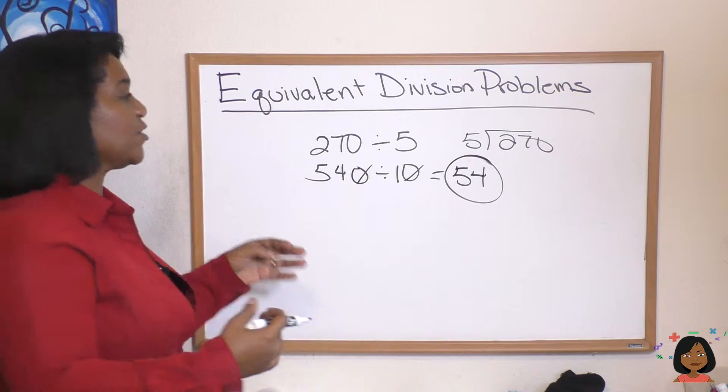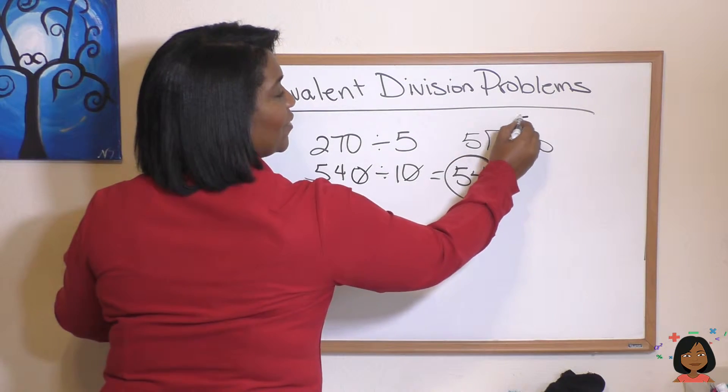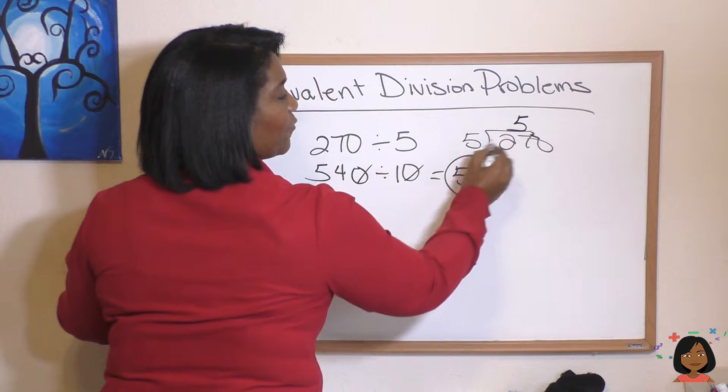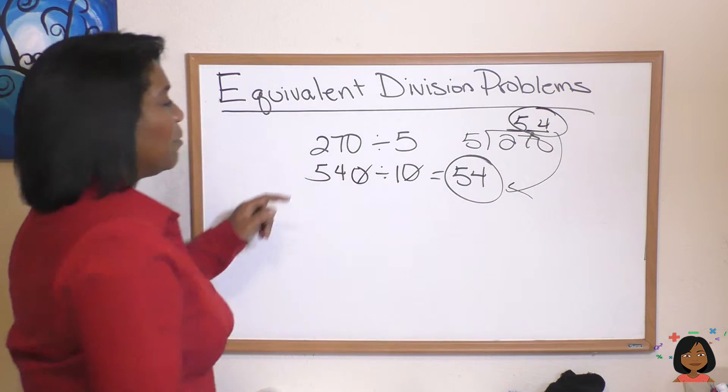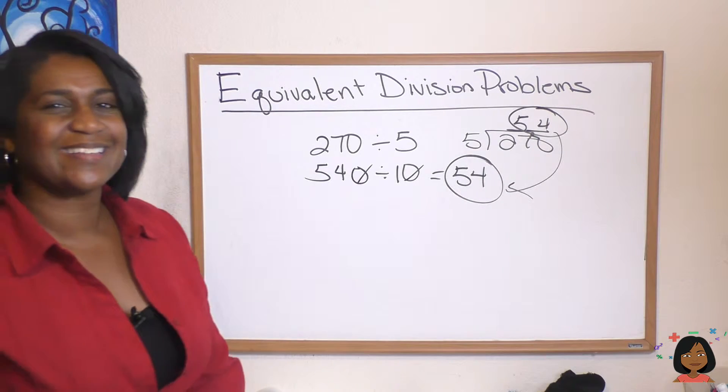And we will see that if I do the long division math, 5 into 27 is 5, 2 is left over, 5 into 20 is 4, I still get 54. But all I had to do was double it and I could do it in my head.